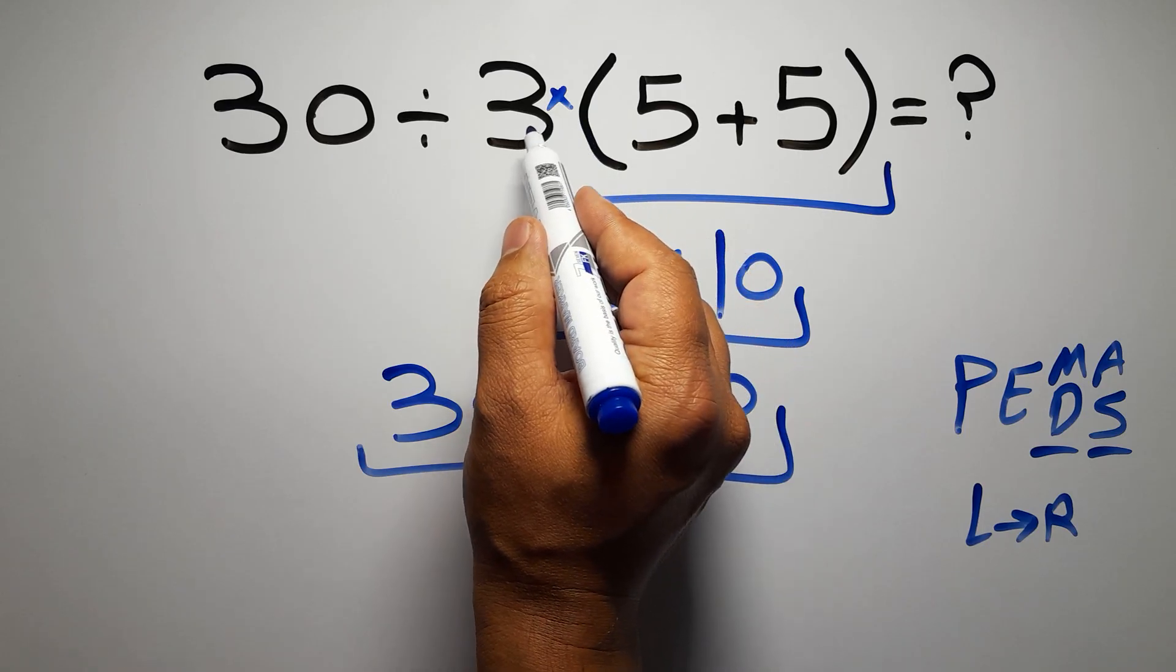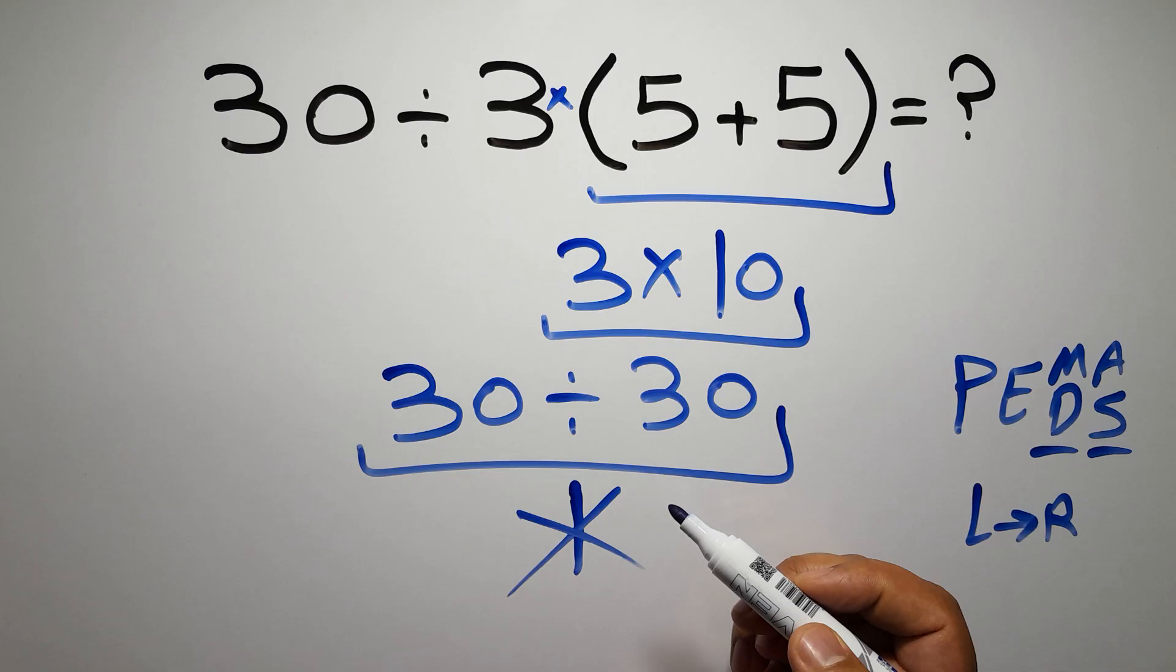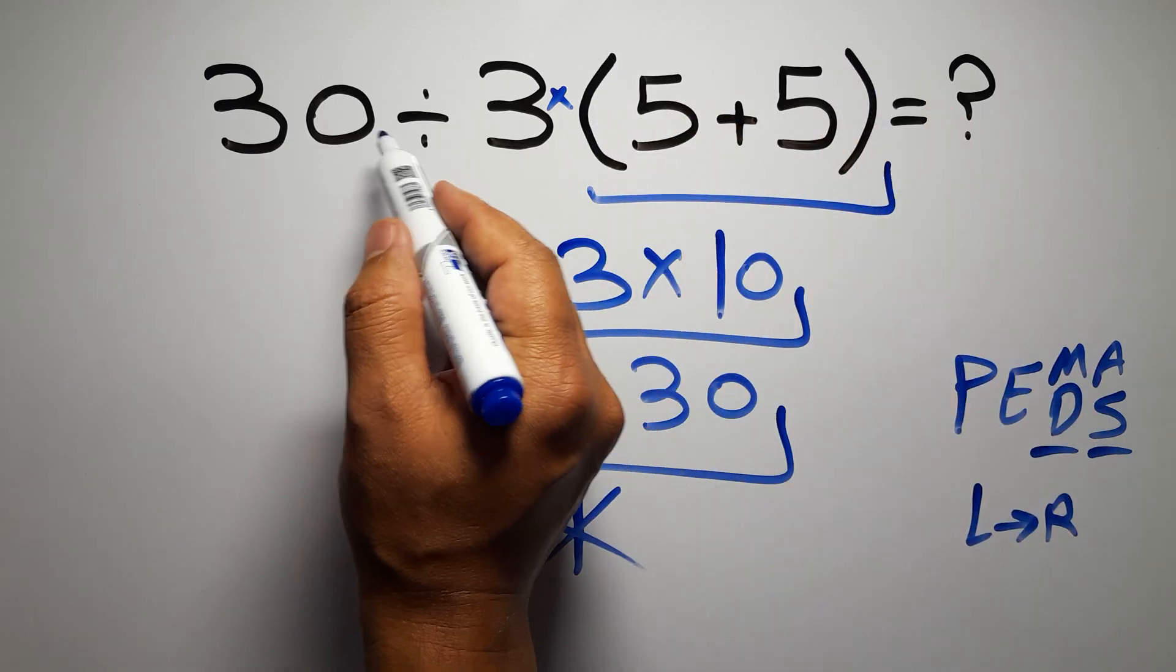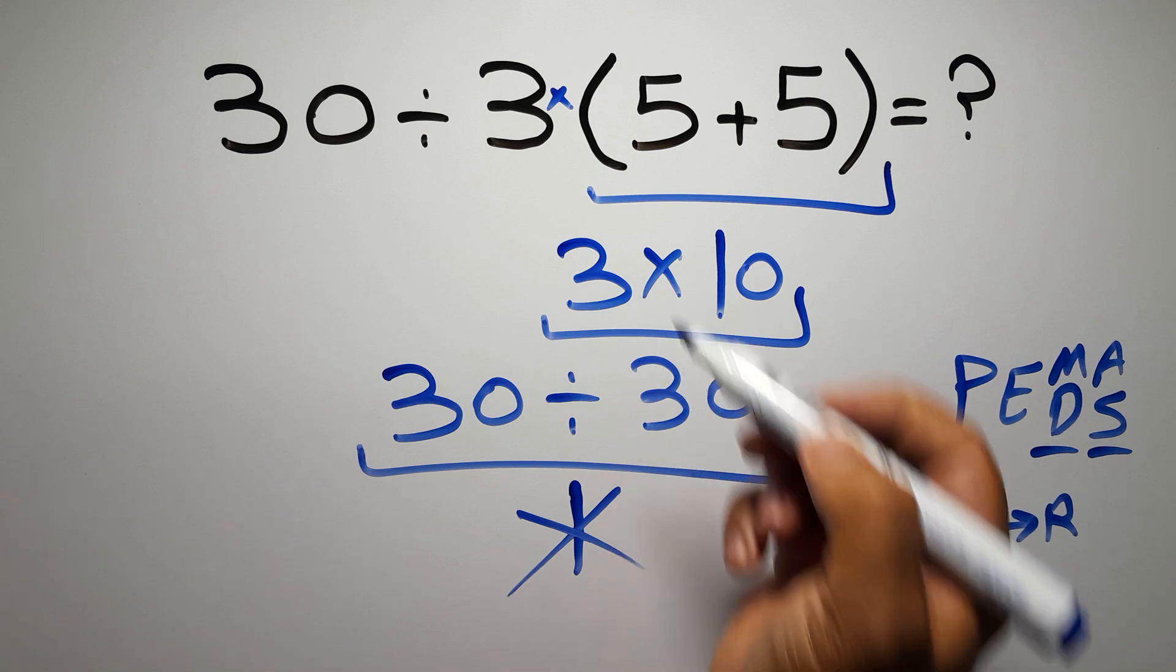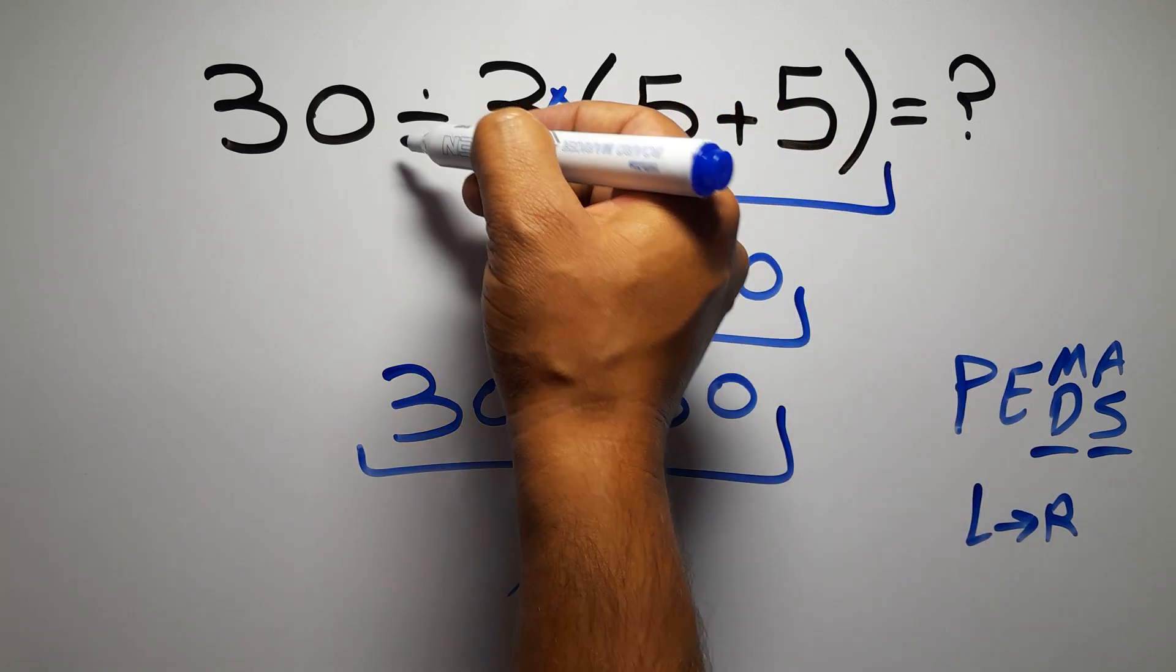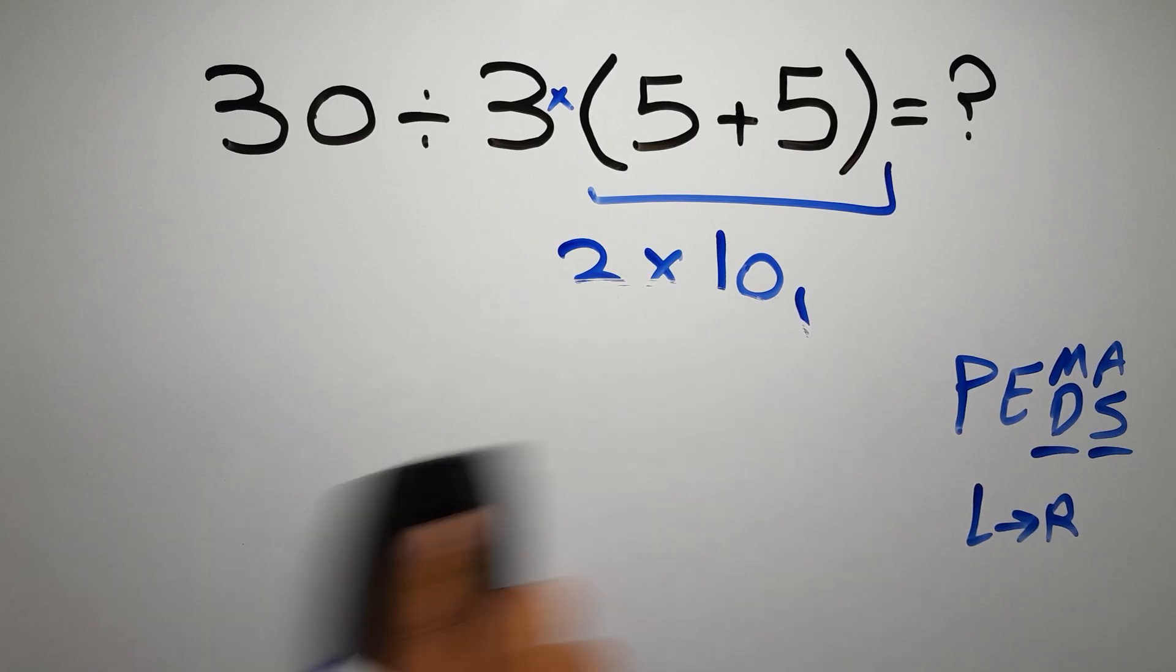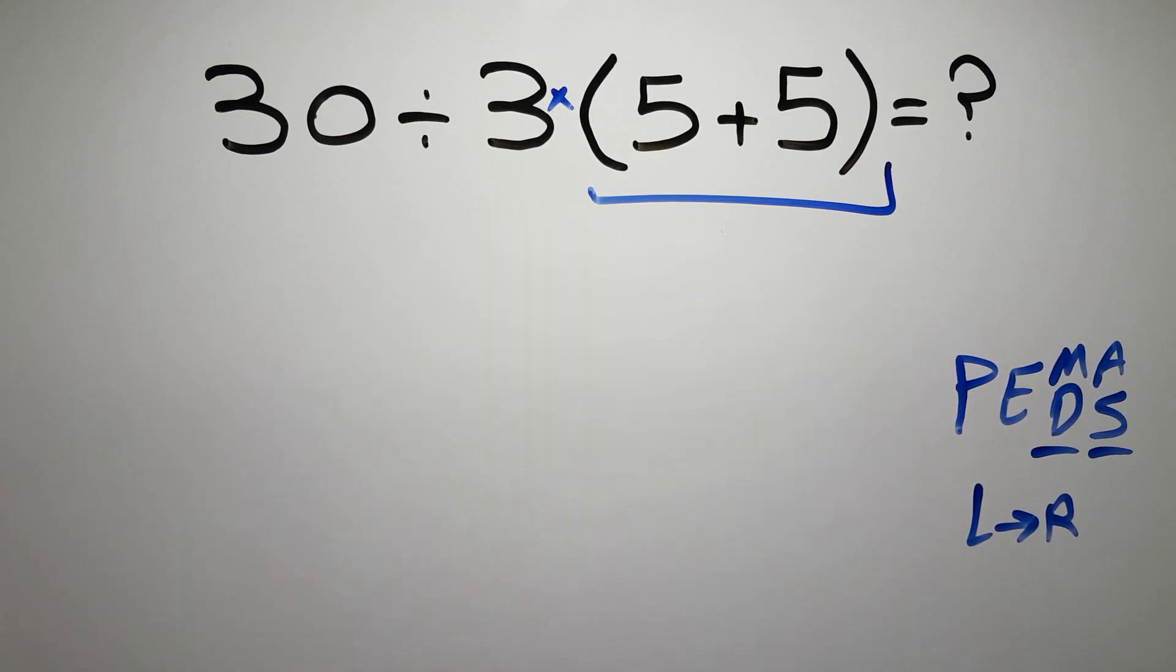So according to PEMDAS, first we have to do this parentheses, then this division, and finally this multiplication. If we do this multiplication before this division, it is wrong.